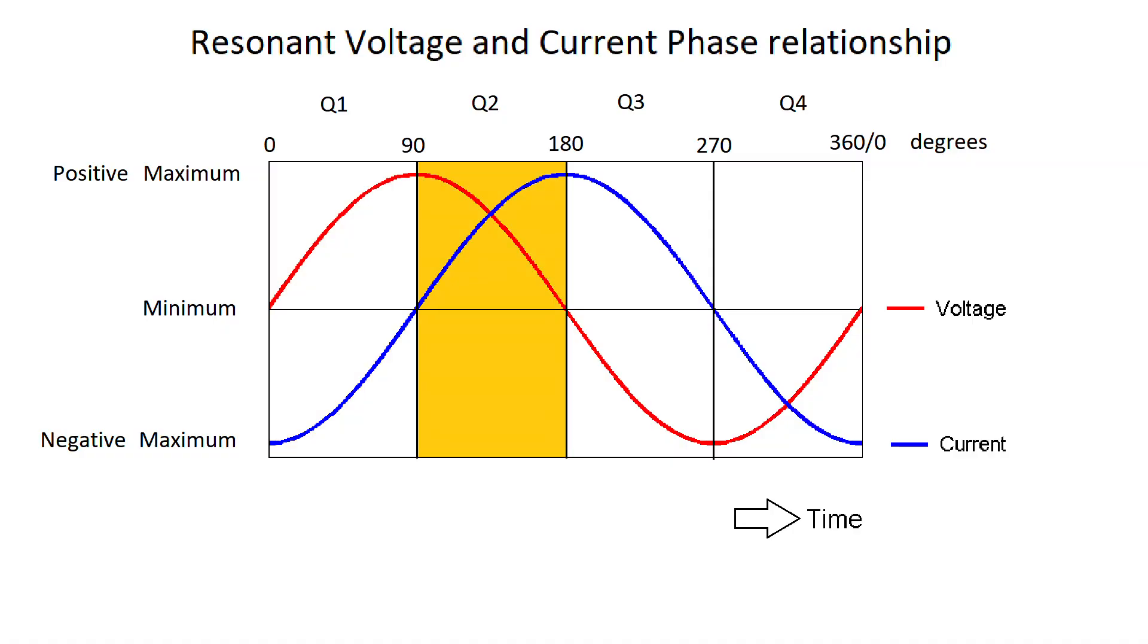I have divided this single period into four quarters, Q1 to Q4. Q1 runs from 0 to 90 degrees and Q2 runs from 90 to 180 degrees and so on. When Q4 ends at 360 degrees, Q1 starts again in a new cycle at 0 degrees.